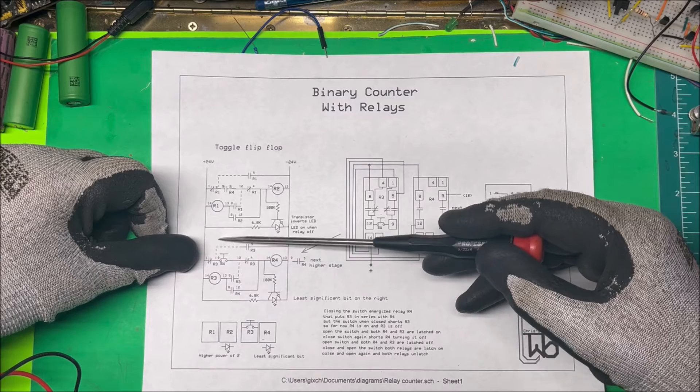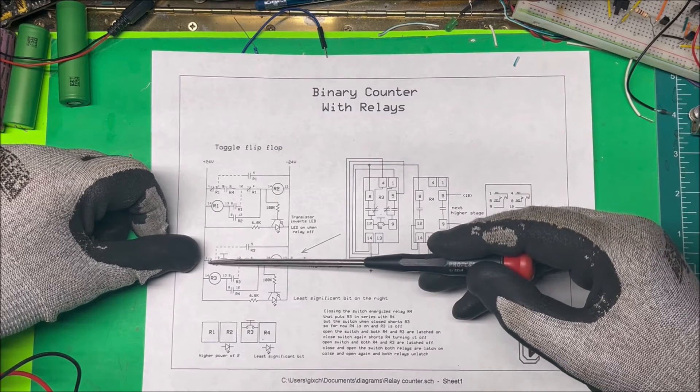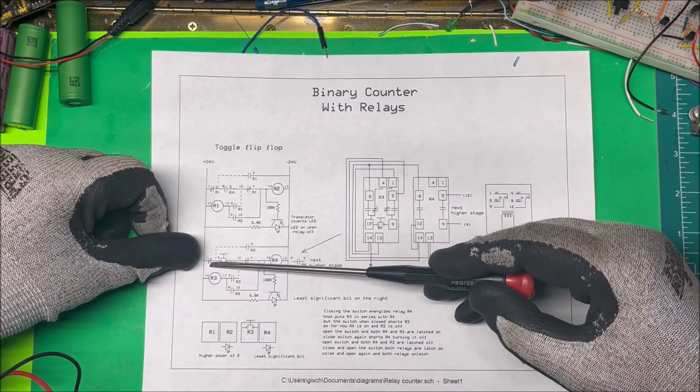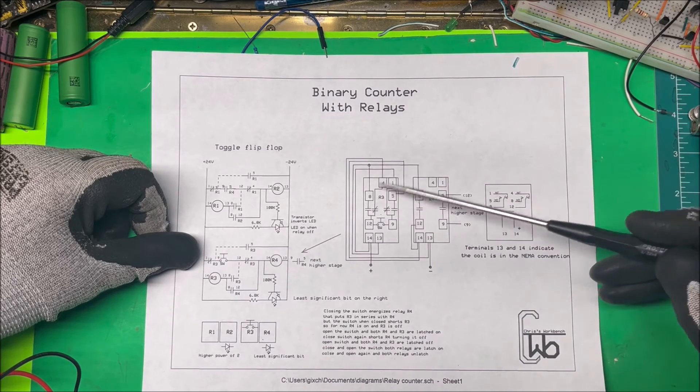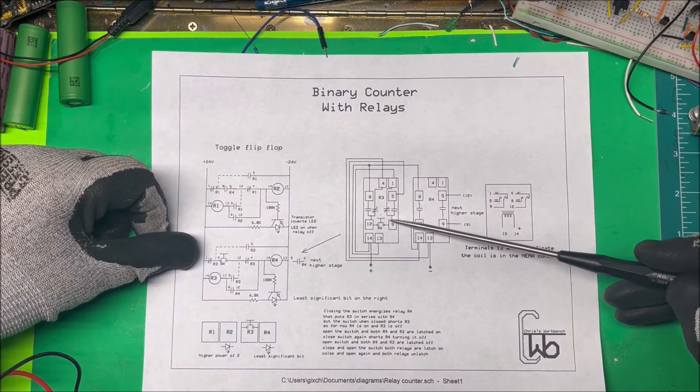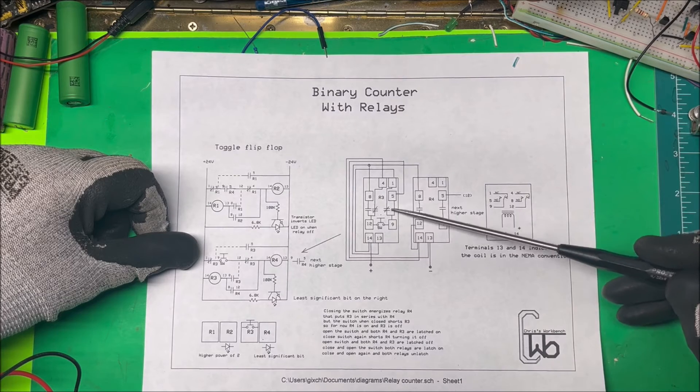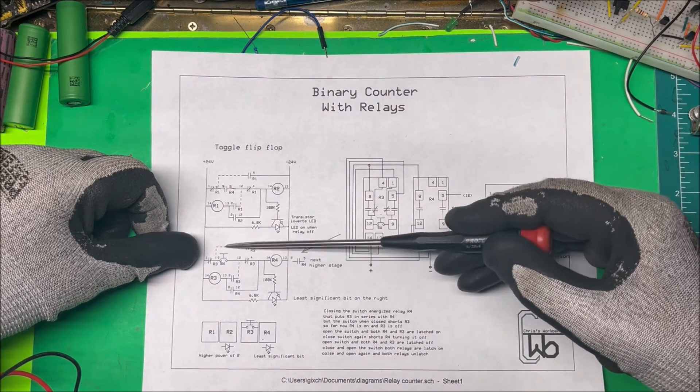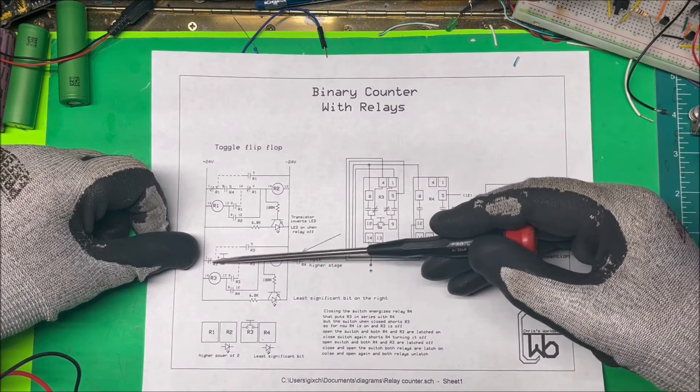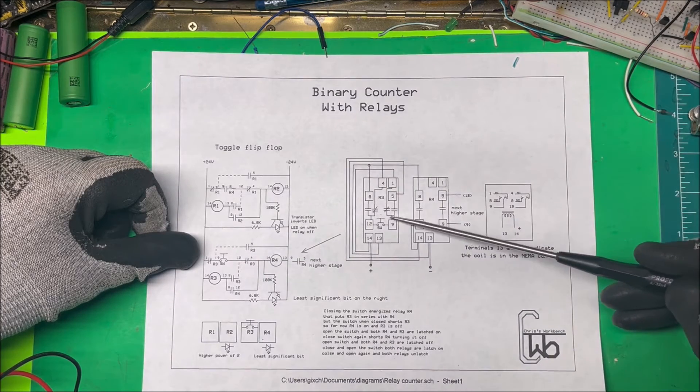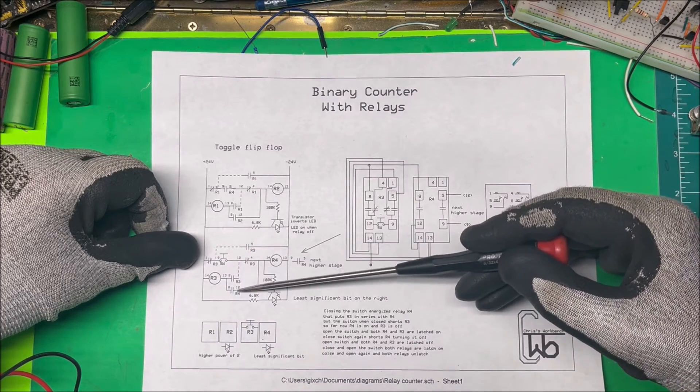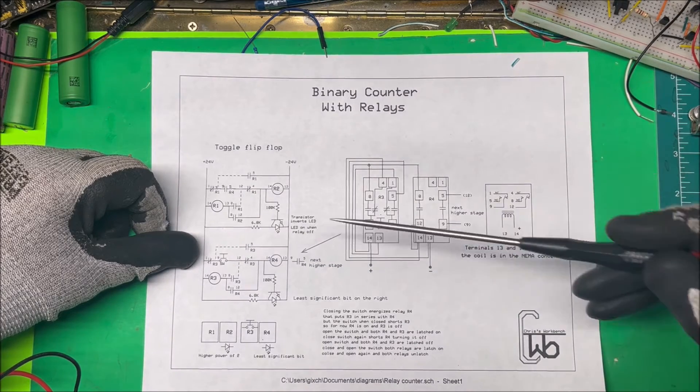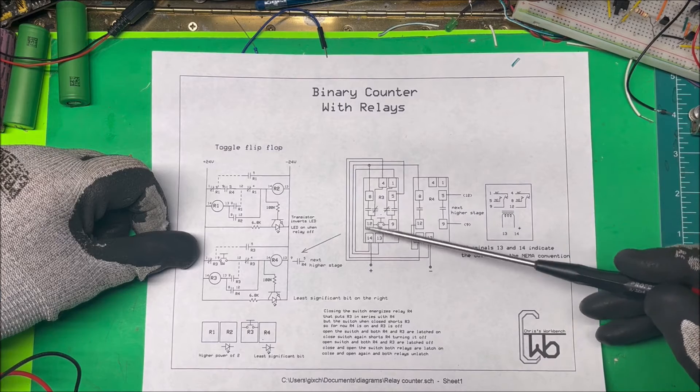These dashed lines here—there is a connection between this normally closed contact and this open contact here, between one and five. That's wired internally into the relay. That's why I have the dashed line there. There's current flowing through there, but it's internal to the relay. Same with this one here, so eight and twelve there. Here's eight and here's twelve, and that's how it's connected through there.